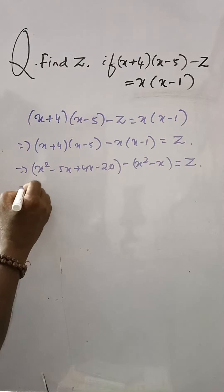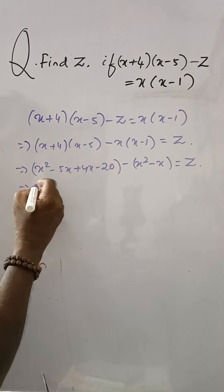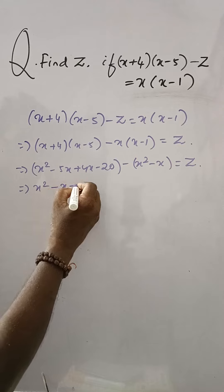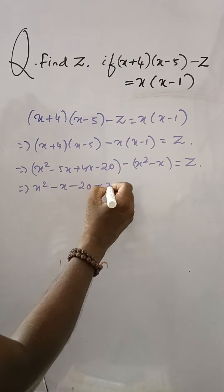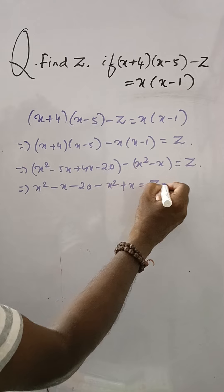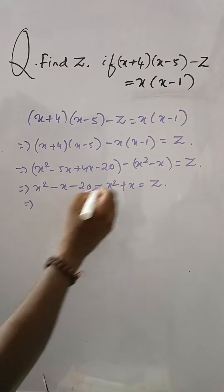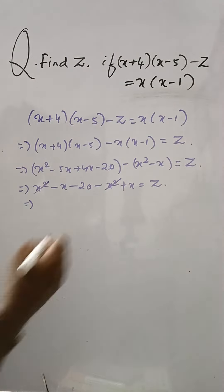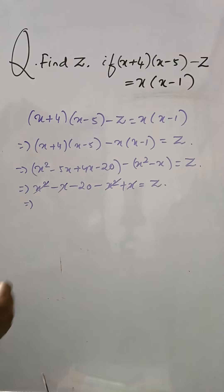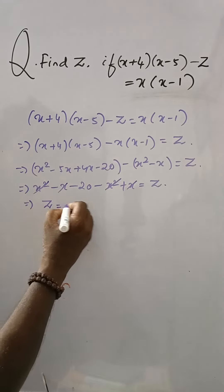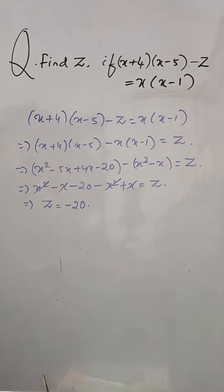This is X squared minus X minus 20 minus X squared plus X is equal to Z. Then, plus and minus cancelled, X also cancelled. So, Z is equal to minus 20 is the answer.